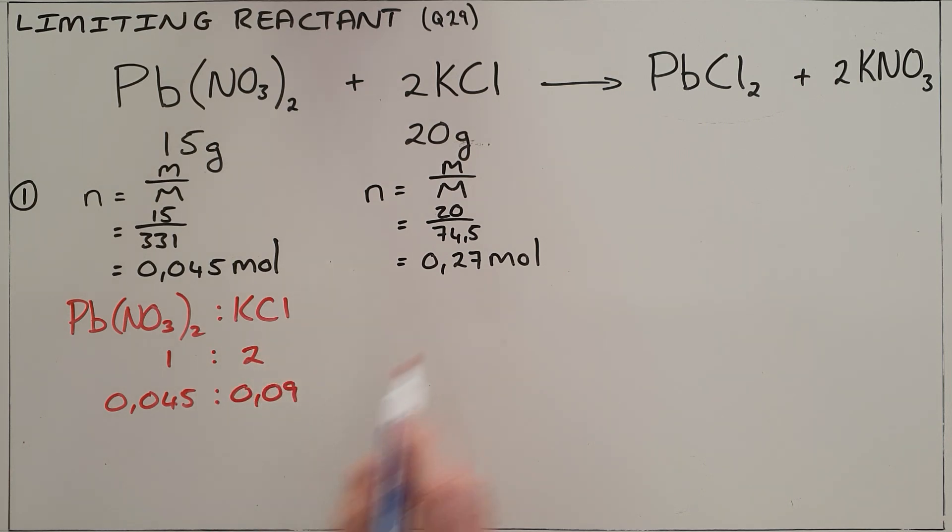From this we can clearly see that we have used up all of the lead nitrate and there's still a whole lot of potassium chloride that remains, which means that this must be our excess reactant and lead nitrate must be the limiting reactant. This can also be done the other way by making the opposite assumption to start with.